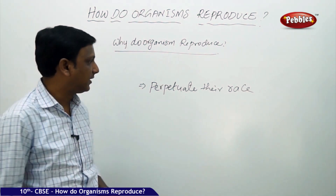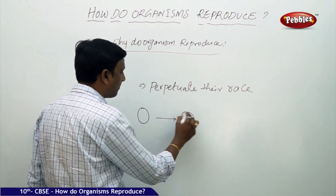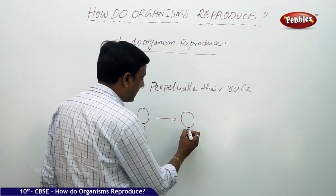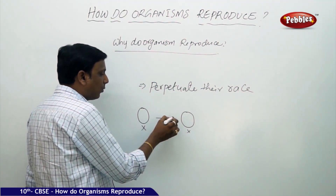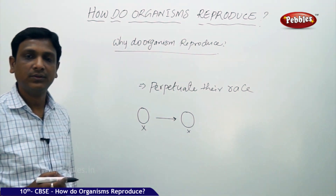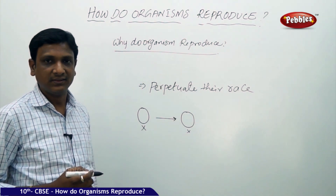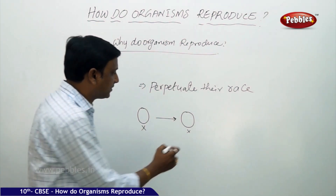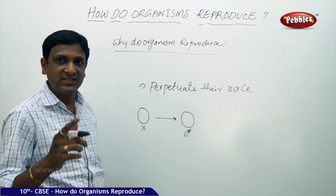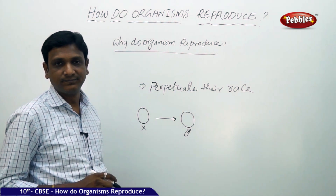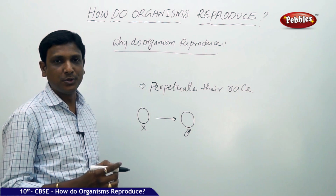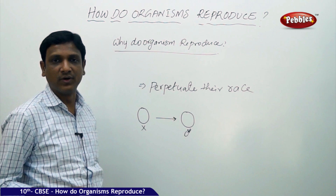Whenever an organism produces another organism of its own kind, will the newly formed organism and the parent organism be exactly identical? No — there are some differences. They may look similar; organism X produces Y which is similar to X, but Y is not exactly identical to X. You may be similar to your father but you are not exactly identical. Your brother and you may be similar but not exactly identical. Each individual is unique — you are unique, your brother is unique, your father is unique, your mother is unique — not matching anyone else on this planet.